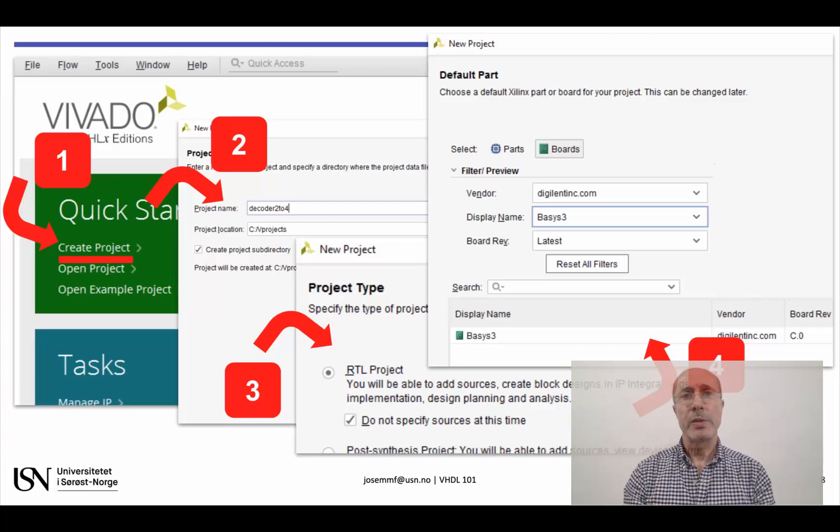We will choose the Register Transfer Level project type and keep the option Do Not Specify Sources at this time. Finally, we will specify the hardware board by selecting the Boards tab and then Digilent.com and Basys-3 from the drop-down lists.